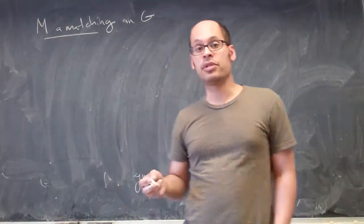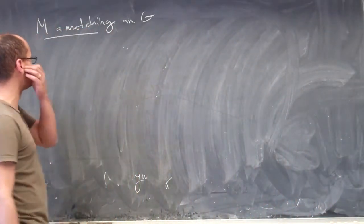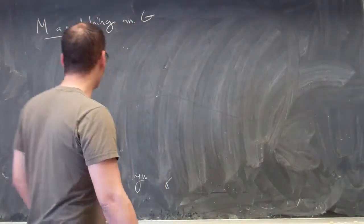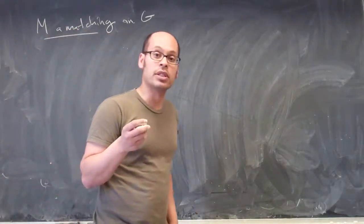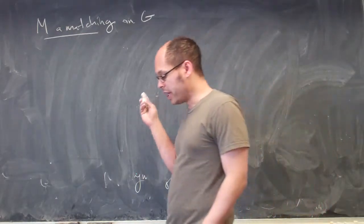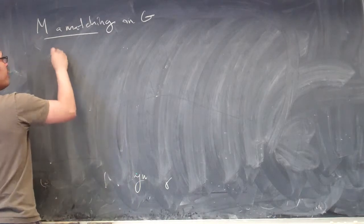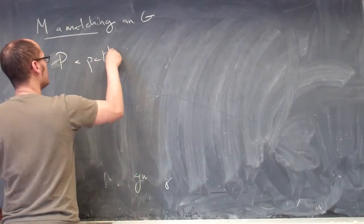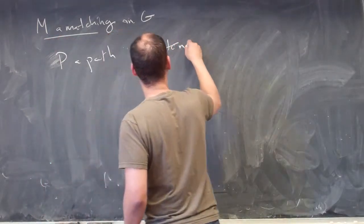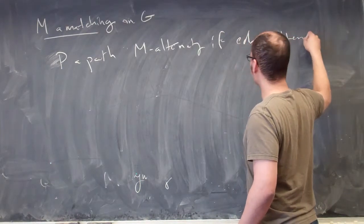Let's begin by remembering a few important tools that are going to help us understand maximum matchings. If we have a matching, there is a notion of a vertex being saturated or not. A vertex is called saturated if it's incident to one of the edges in the matching. If P is a path, then we say the path is called M-alternating if the edges are alternately in and not in M.